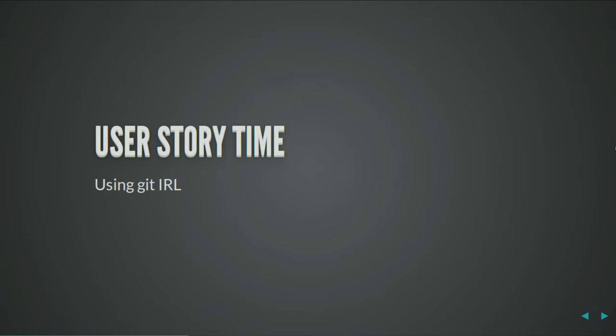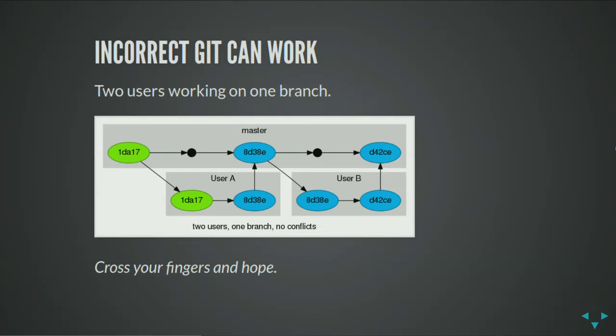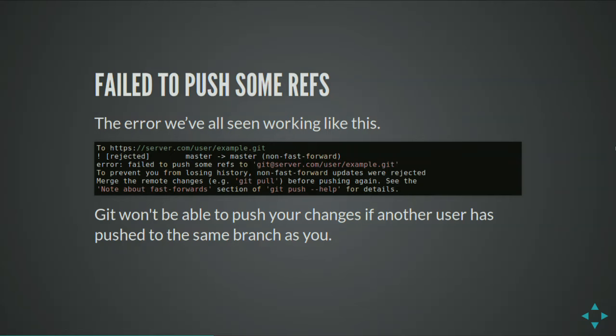Story time: using Git incorrectly can effectively work. You have two users on the same branch — one checks out the current head, makes a change, pushes to master; the next user pulls their change and continues. It works fine as long as there's no overlap. But when you get 'failed to push some refs,' everyone is adding little commits fighting back and forth. The important thing: the power of Git is that it can branch so easily. If you're only working on one branch, you're basically using Git like a 20-year-old version control system.